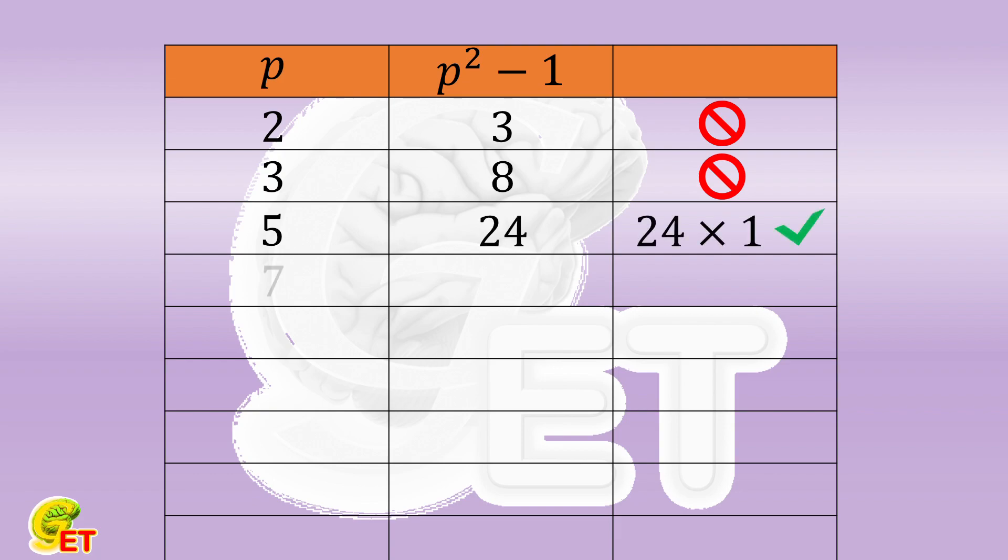When p equals 7, the square of p minus 1 equals 48, also works. When p equals 11, the square of p minus 1 equals 120, works again.